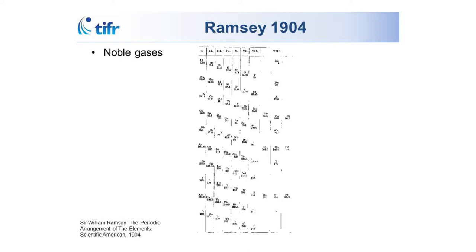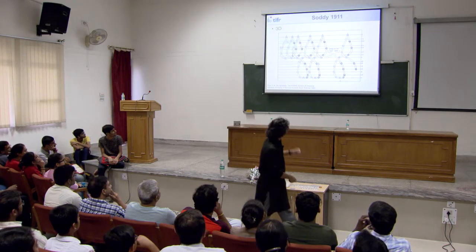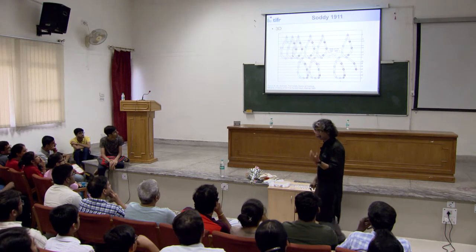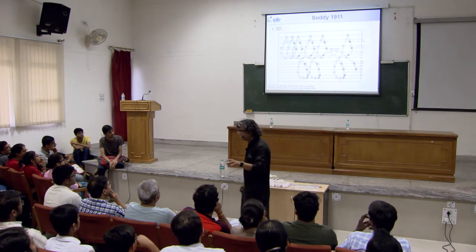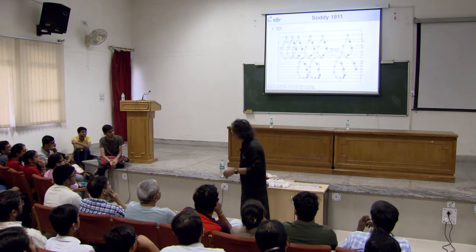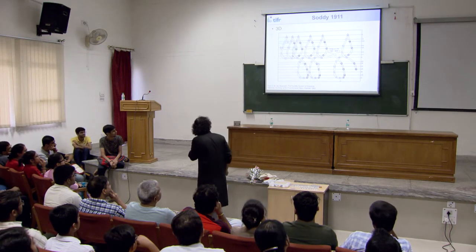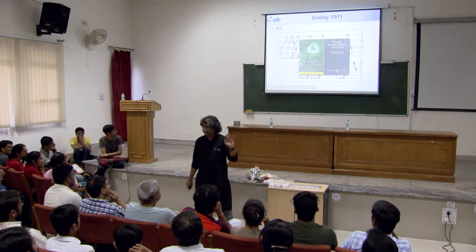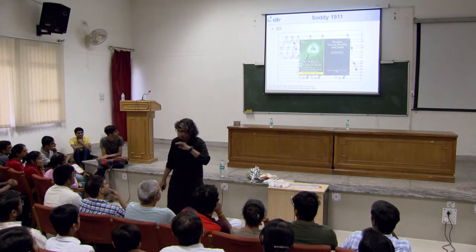Soddy, the isotopes guy, comes up with a spiral like this. Soddy is one of those scientists who, after getting the Nobel Prize, sort of went off track. He decided to focus on economics and came up with a theory of Cartesian economics — about virtual wealth, debt, and solutions to the economic paradox. He was actually talking about stuff like Bitcoins and virtual wealth, but in those days people thought he was completely nuts.